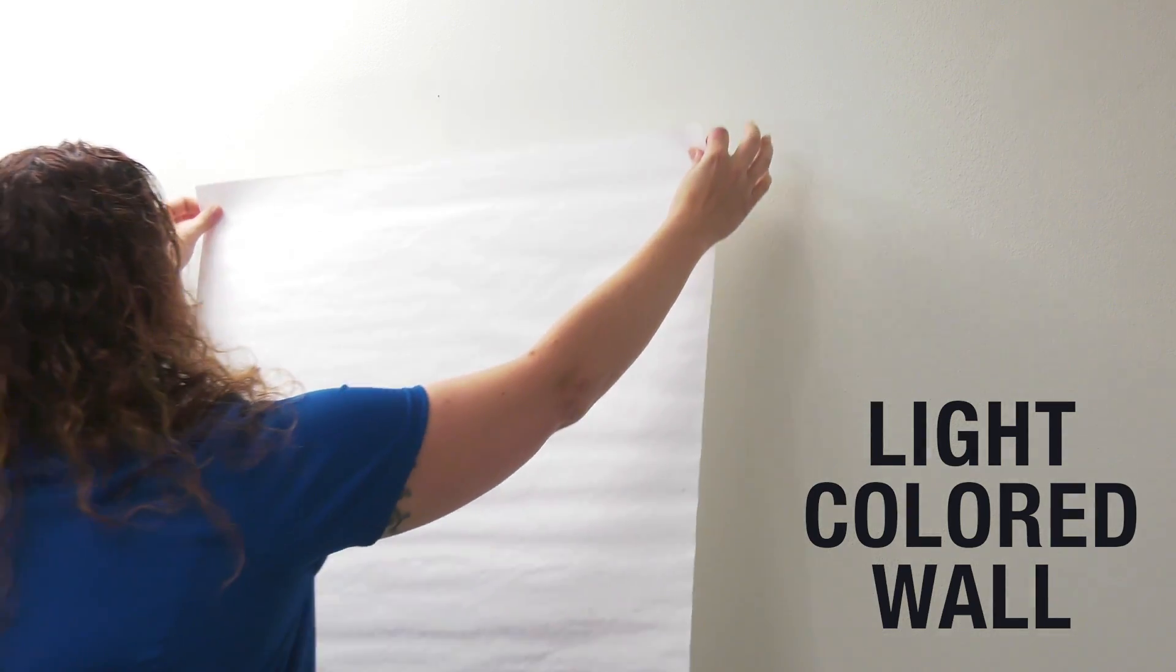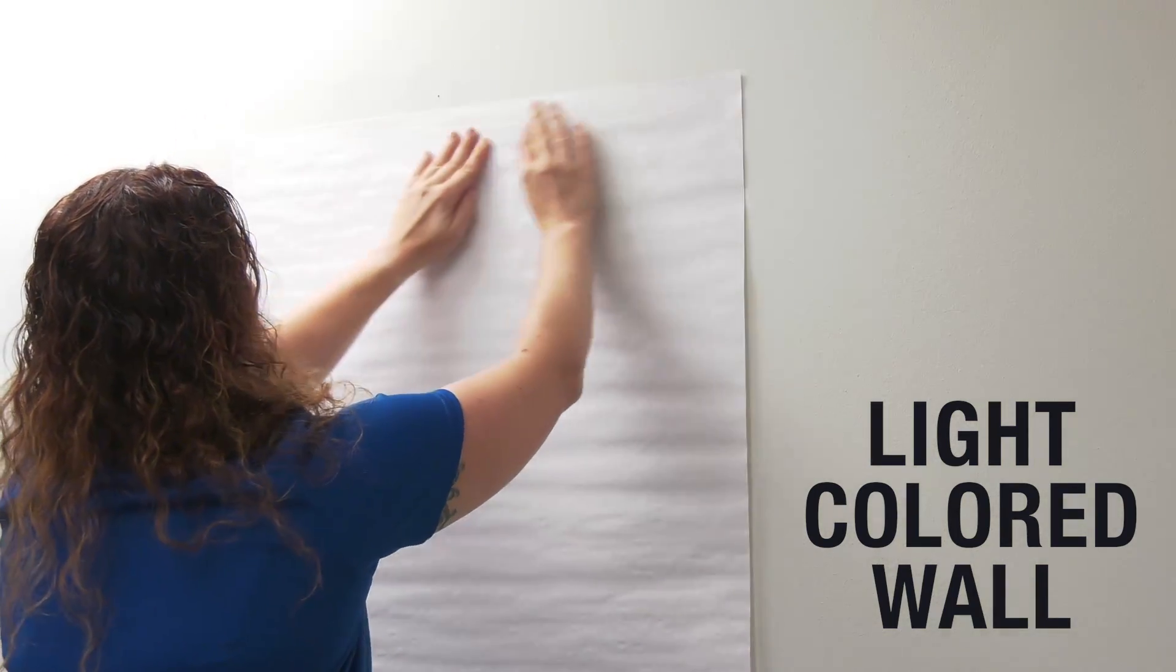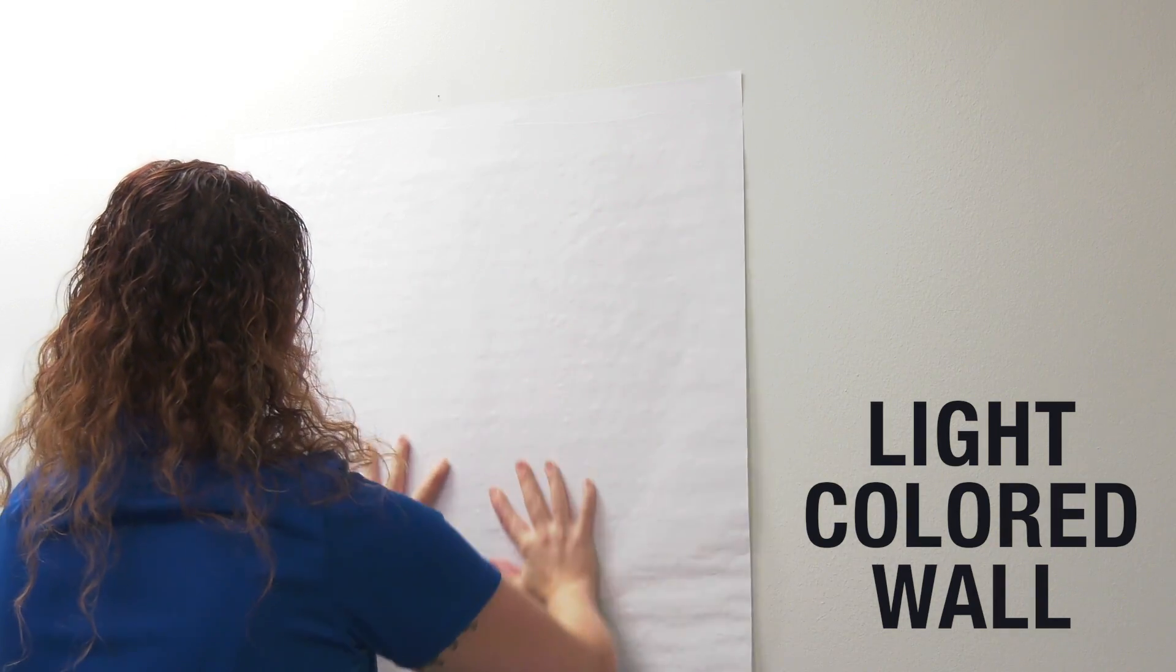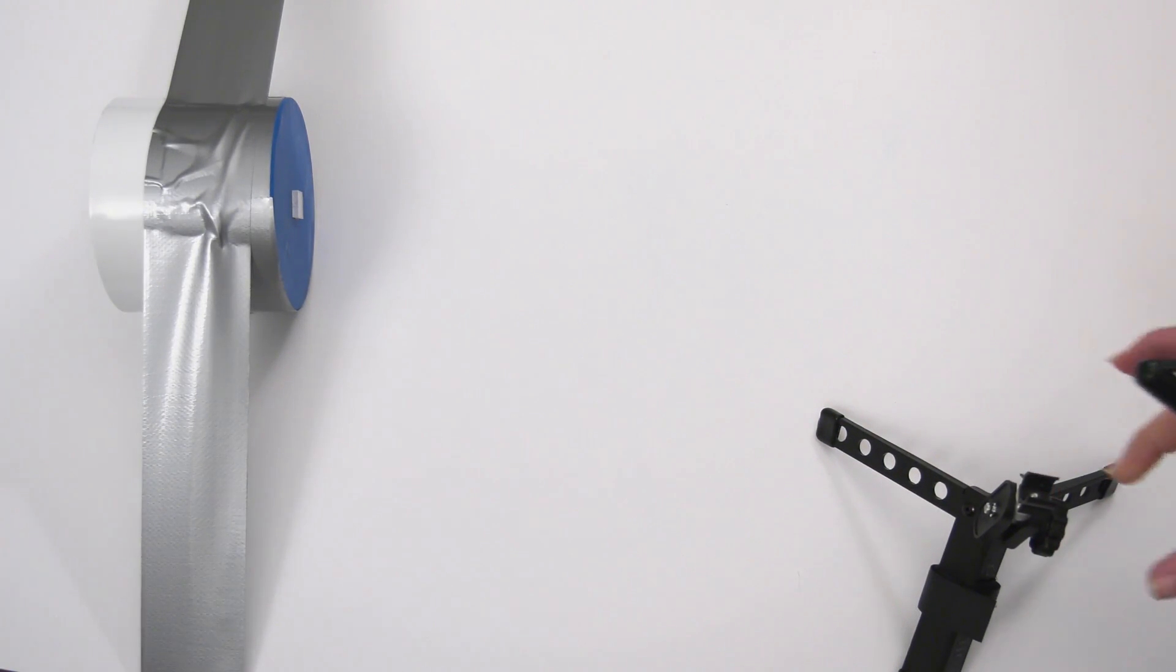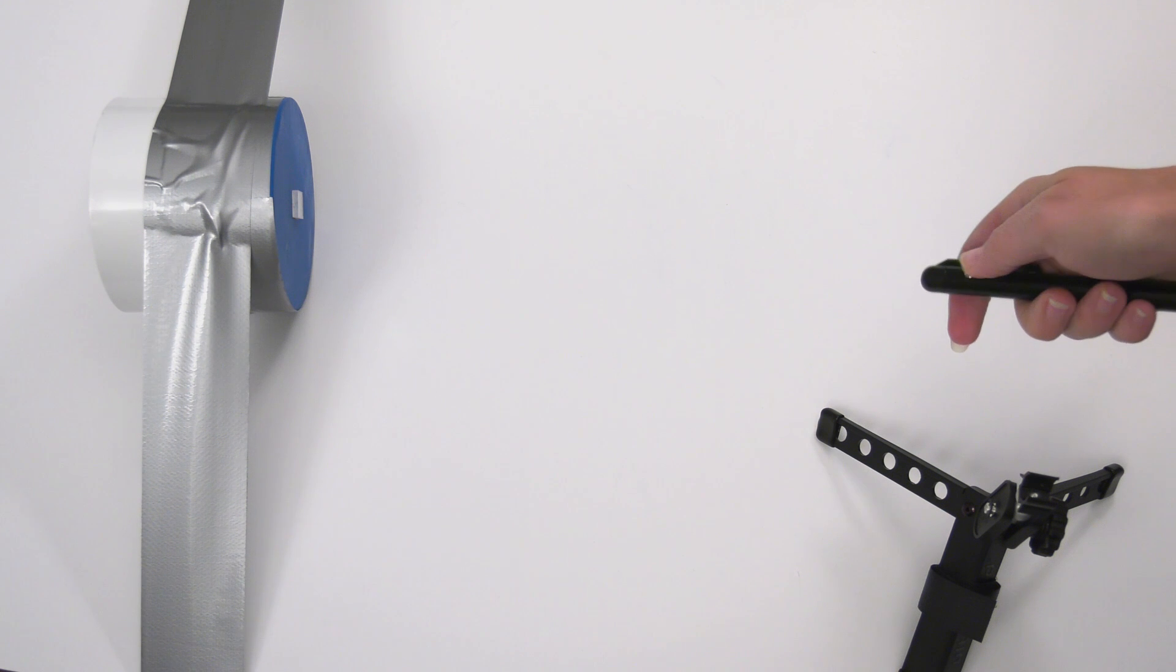In order for the laser to stand out, the wall should be light colored. If it isn't, tape a sheet of white paper on the wall. Remove the laser pointer from its case and, if necessary, install the batteries.